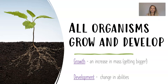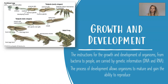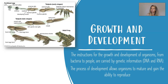Our next characteristic of life is that all organisms grow and develop — and those two terms mean different things. Growth is simply an increase in mass, going from smaller to bigger. Development is a change in abilities. Looking at the life cycle of a frog, can you identify both growth and development? We've got an increase in mass over time and also a change in abilities. The instructions for growth and development — from bacteria all the way to people — are carried by genetic information, DNA and RNA, and it's the process of development that allows organisms to mature and gain the ability to reproduce.